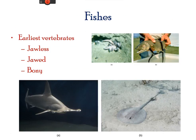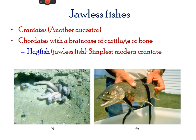Fishes are the earliest vertebrates, found as primitive jawless fish that evolved to jawed fishes and then to modern bony fishes. Jawless fishes are craniates that include chordates with heads, such as a hagfish that resembles an eel. They live on the ocean floor and feed on dead invertebrates, other fishes, and marine mammals. A unique feature of this group is that they have slime glands beneath the skin and are able to release mucus through surface pores.